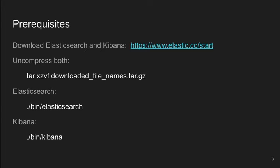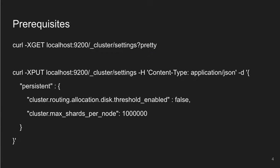Prerequisites: if you want to follow along, you need to download Elasticsearch and Kibana — there's a link, they're super simple. On Mac or Linux you expand the tar and just run them. I open a command prompt with a tab for each so I can see standard out, because both have standard out that will give you useful information if you run into trouble.